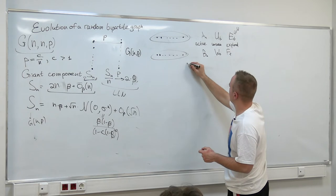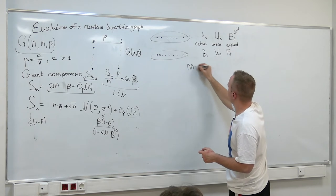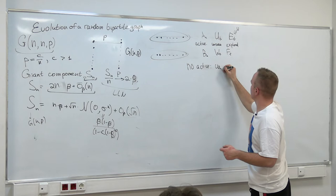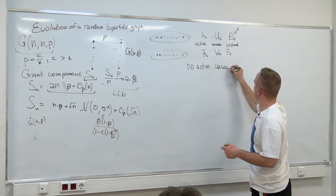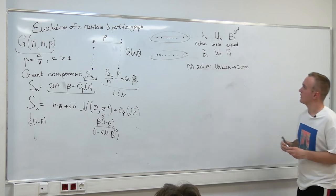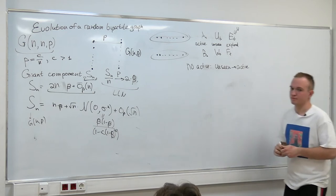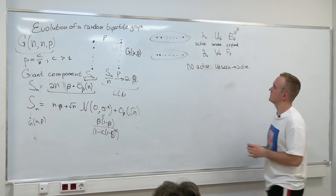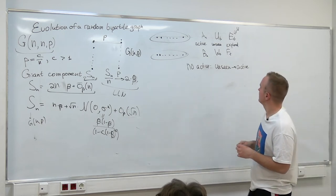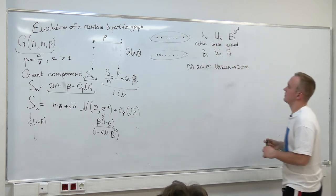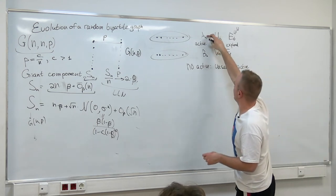If we have no active vertices, we take an unseen one — that is, we're starting a new component. That's defined for every graph. So you have a bipartite graph and you define A_N, B_N, U_t, and so on.